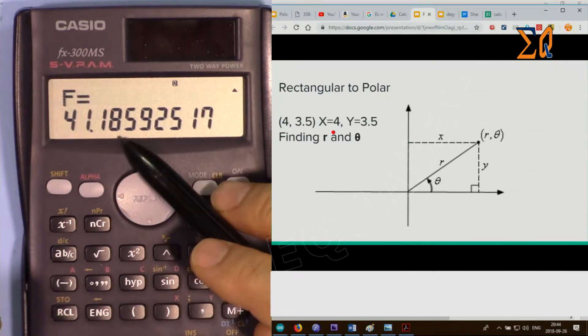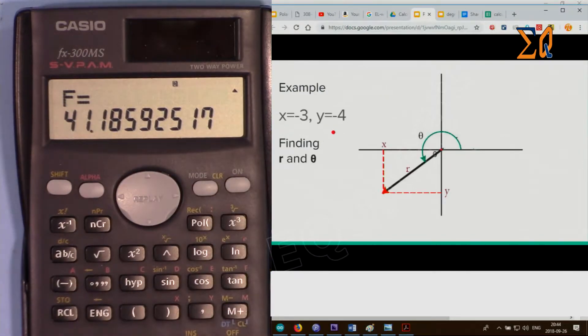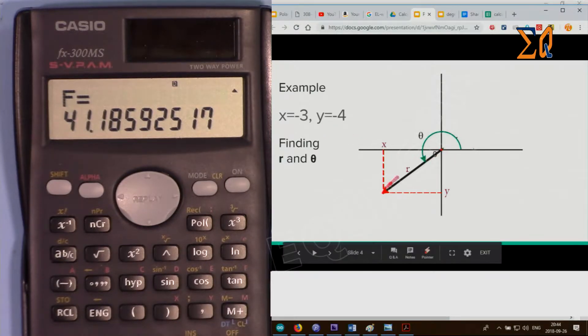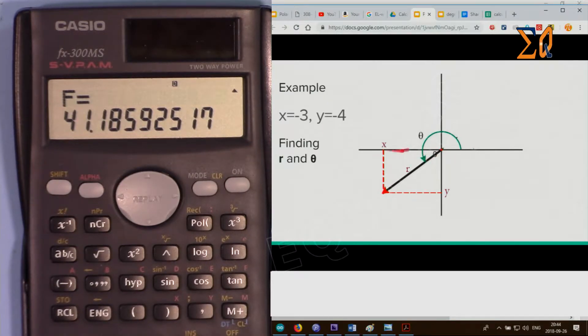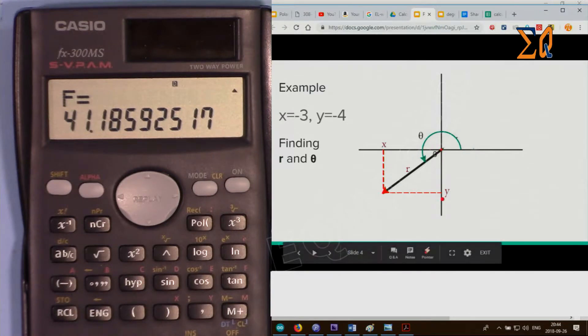Now let's say you want to do this point where X is minus 3 and Y is minus 4, and you want to find R and theta.